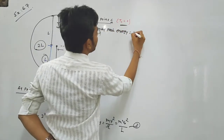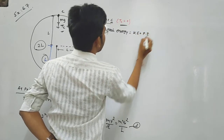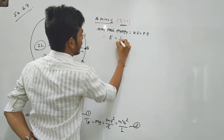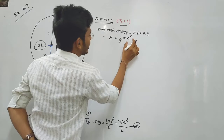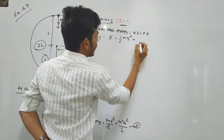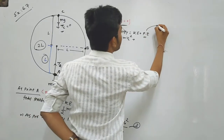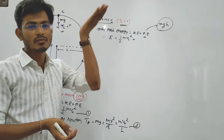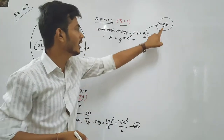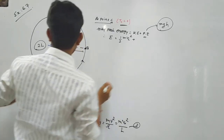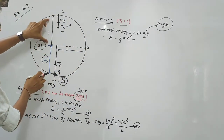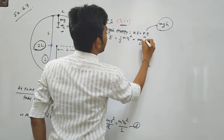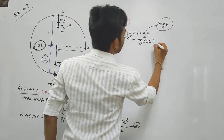Total mechanical energy equals kinetic energy plus potential energy. Therefore at point C: E equals half m Vc squared plus potential energy. The height at point C above point A is 2L (diameter of the circle), so potential energy at C equals mg times 2L. This gives us equation number 3.